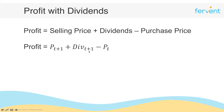Strictly speaking, the notation div(t+1) implies all dividends arrive at time t+1, but in reality dividends arrive quarterly. So more precisely, you'd write div(t+0.25) plus div(t+0.5) and so on until t+1. But that's unnecessarily complicated, so to simplify things I've just written it as div(t+1).